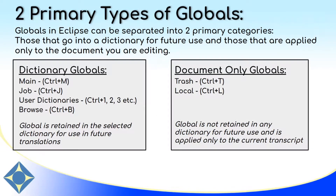Globals in Eclipse can be separated into two primary categories: those that go into a dictionary and can be used again in the future, and those that do not go into a dictionary and are only changes to that specific document. Dictionary globals include entries that go into your main and job dictionaries, as well as any user dictionaries assigned in user slots 1 through 8. Additionally, if there's a dictionary not assigned to a job, you can use the browse command to browse for a dictionary to put that entry into.